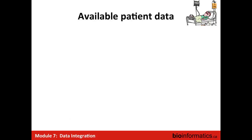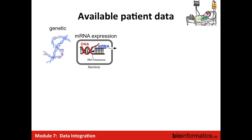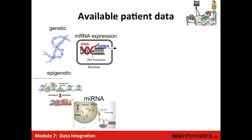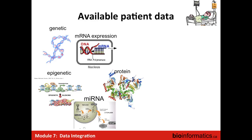This is the available patient data. It might not be available for every single patient for every disease, but across several diseases it's definitely all available: DNA, mRNA expression, epigenetic data — which includes DNA methylation and epigenetic marks — microRNA data, and protein data. This is all omics, and a lot of it is now available for large sets of patients, especially in cancer.